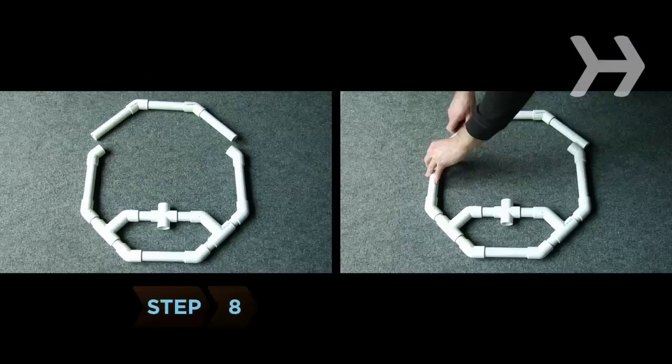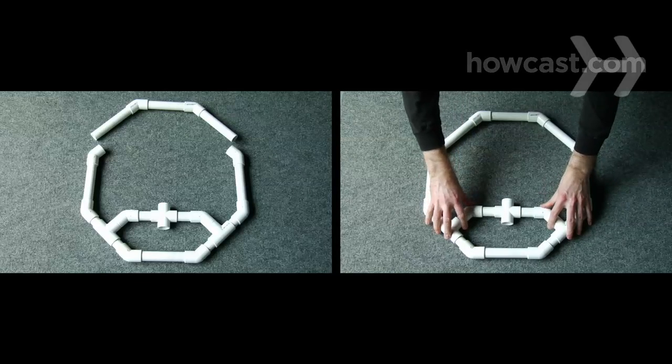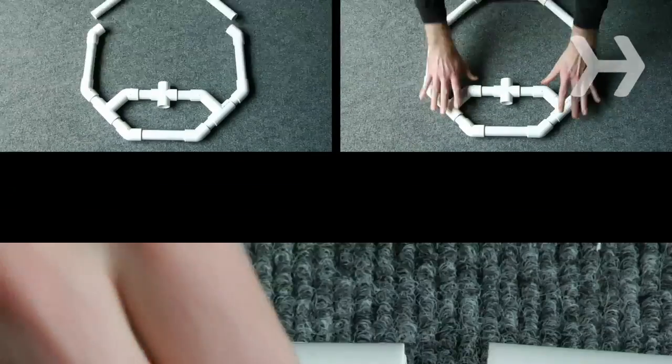Step 8. Connect the elbow connectors on the top pieces of your stabilizer to both 6-inch side pieces, forming an octagon and completing your basic frame.